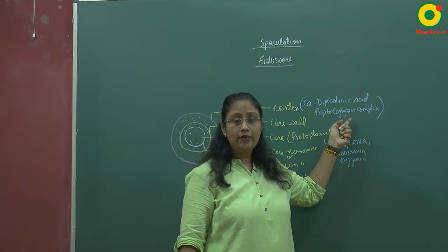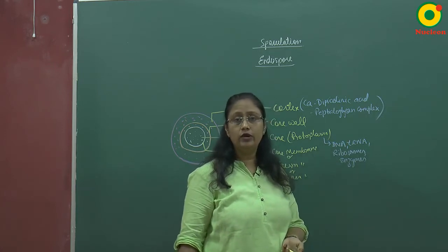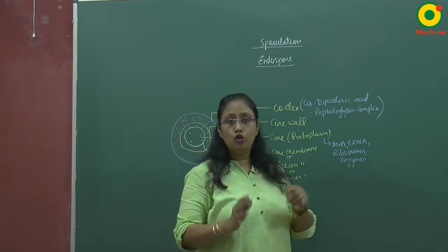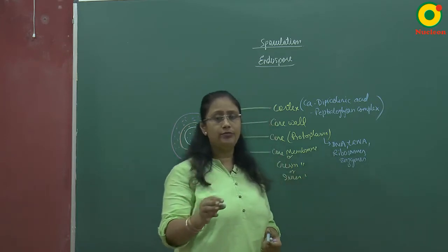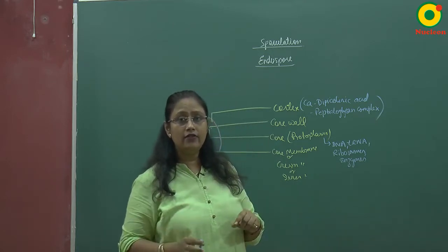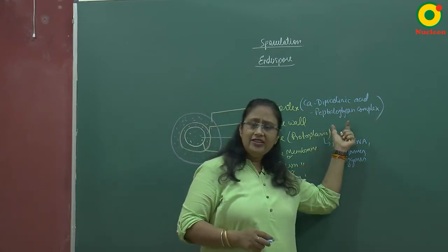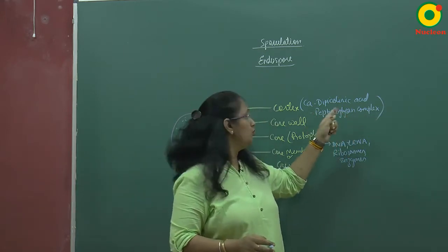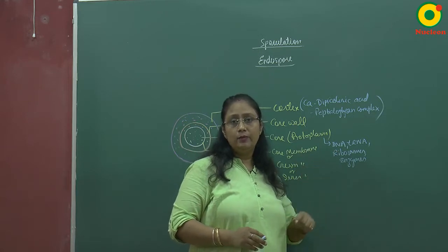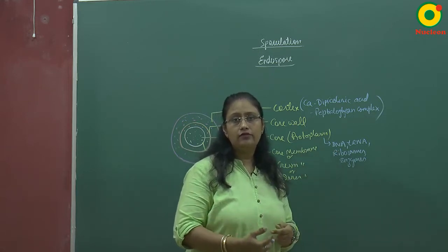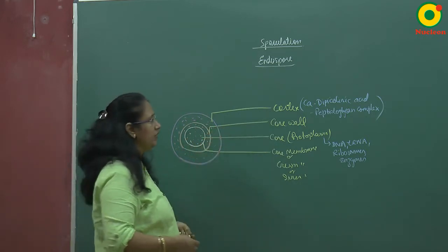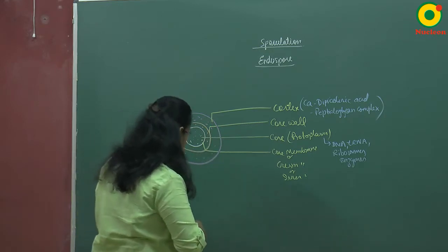The endospore can survive in very high temperatures up to 150–170°C, as well as in very low temperatures down to minus 100°C. This survival is due to the presence of the calcium dipicolinic acid complex as well as the thick wall layers.